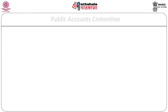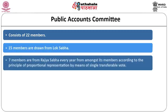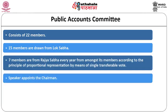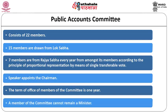The second committee is the Public Accounts Committee. It consists of 22 members: 15 members drawn from the Lok Sabha and 7 members drawn from Rajya Sabha, elected every year from amongst its members according to the principle of proportional representation by means of single transferable vote. The speaker appoints the chairman, and by tradition the chairman is always appointed from the main opposition party. The term of office is one year, and a member of the committee cannot remain a minister.